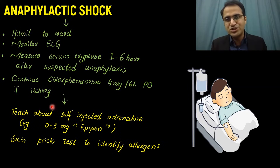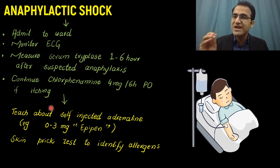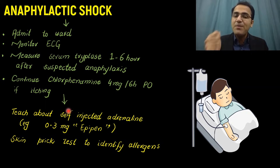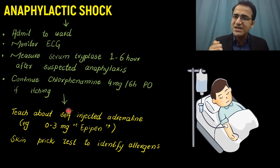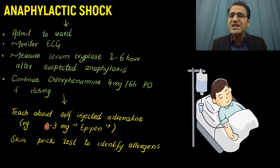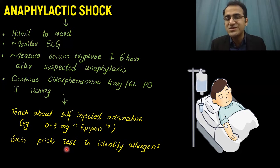When discharging the patient, guide them about avoiding the specific allergen that triggered the anaphylactic shock. Teach the patient about self-injected adrenaline — the EpiPen — which is 0.3 mg epinephrine that the patient can inject themselves the moment they realize they have been exposed to an allergen and are having an allergic reaction, to prevent a severe attack. If the allergen is unknown, perform a skin prick test before discharging to identify the allergens.